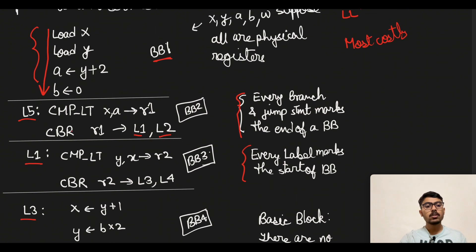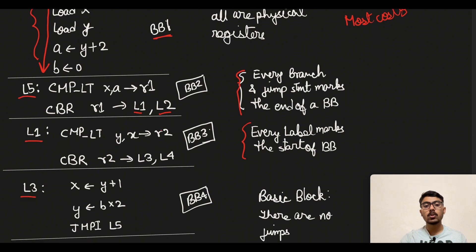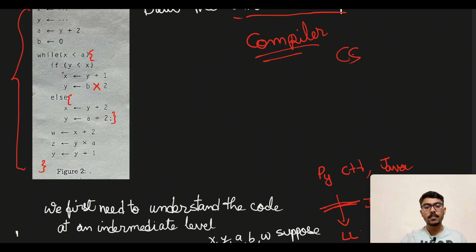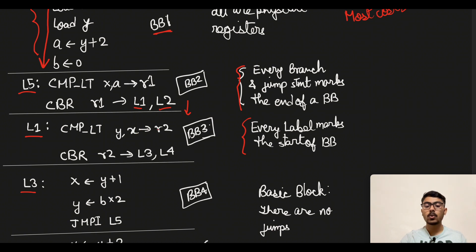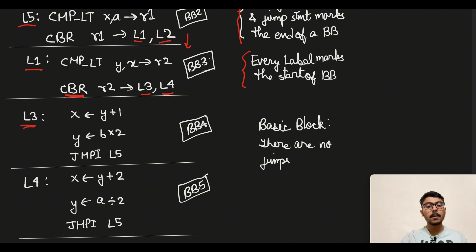Going back to our problem: the control branch statement says if r1 is set we go to L1, otherwise to L2. Then we see a label again, so according to our rules we start a separate basic block — we move from BB2 to BB3. In BB3 we have the if statement: we compare whether y is less than x using CMP LT y, x. If y is less than x, r2 is set to 1. Then a control branch says if r2 is 1 go to L3, otherwise go to L4.